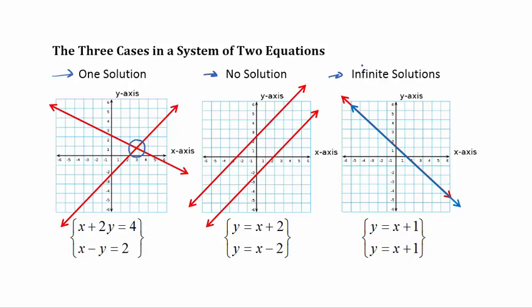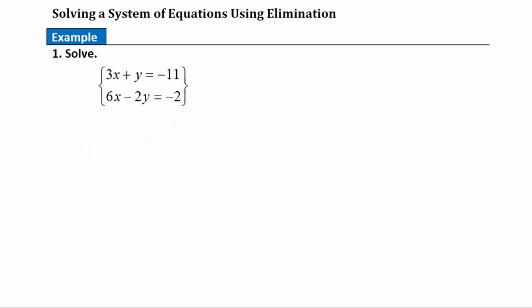The third and final case is infinite solutions. This occurs when we have basically the same equation twice. When we graph one equation right on top of the other, they'll have all kinds of points in common, and all of those points will end up being a solution. Now let's take a look at an example that will help you understand how to solve a system of equations using elimination.